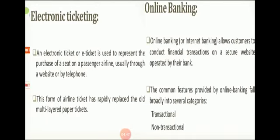We discuss about electronic ticketing and online banking. An electronic ticket or e-ticket is used to represent the purchase of a seat on a passenger airline, usually through a website or by telephone. This form of airline ticket has rapidly replaced the old multiple-layered paper tickets. Online banking allows customers to conduct financial transactions on a secure website operated by their bank. The common features provided by online banking fall broadly into two categories: first is transactional, second is non-transactional.